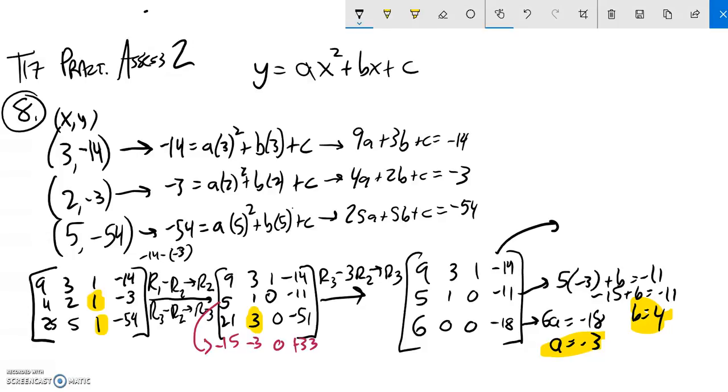Plug those both into this top equation to get my c value. 9 times negative 3 plus 3 times 4 plus c is negative 14. So 9 times negative 3, that's negative 27, plus 12 plus c equals negative 14. Negative 15 plus c is negative 14. So c must be 1.